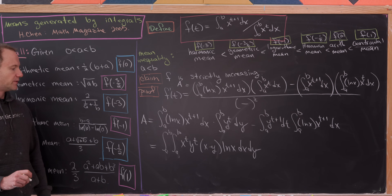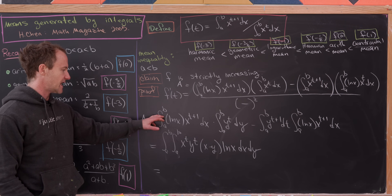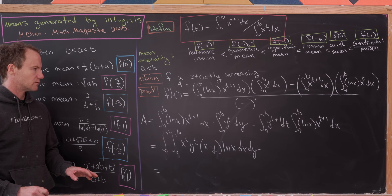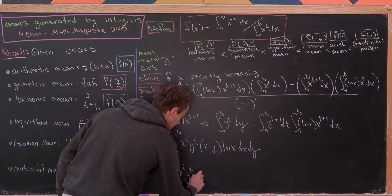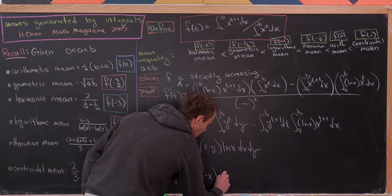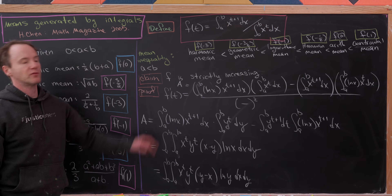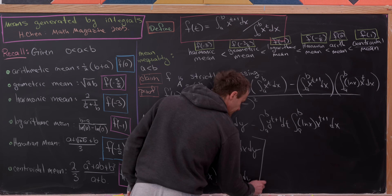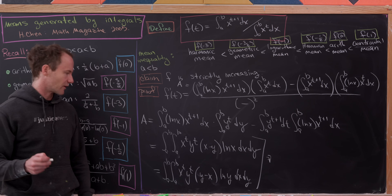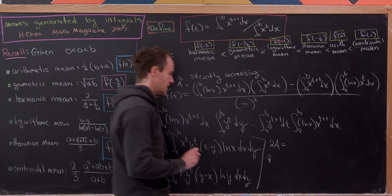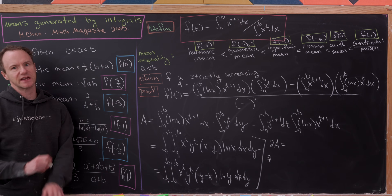By switching x and y, we get an equally valid expression: A equals the double integral of x^t·y^t·(y - x)·ln(y) dx dy. These two expressions for A can be combined. Looking at 2A — the sum of both expressions — gives the double integral over [a,b]² of x^t·y^t·(x - y)·(ln x - ln y) dx dy.